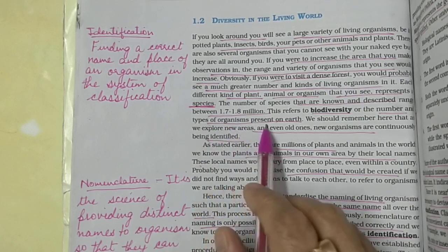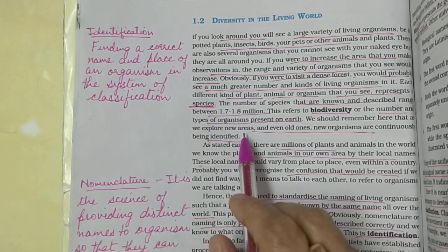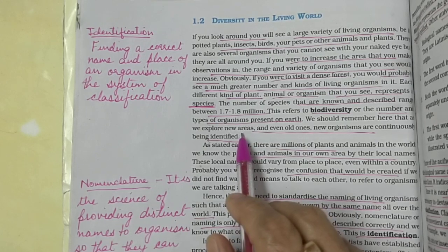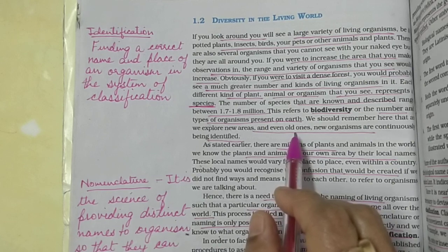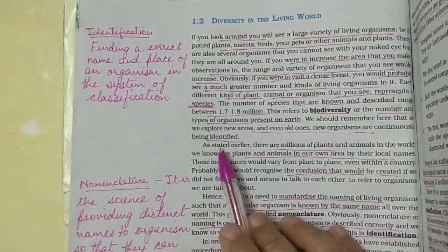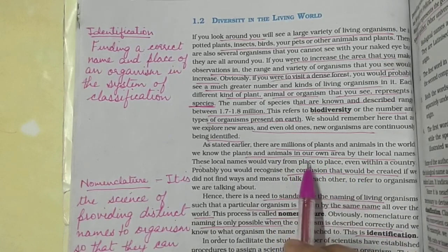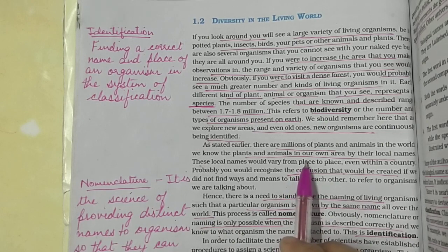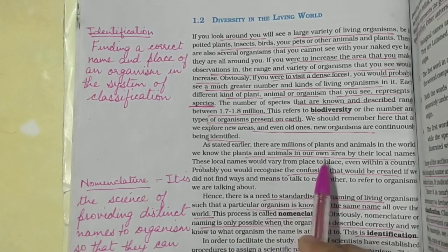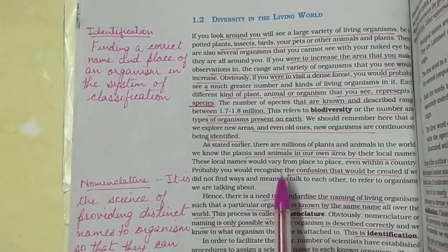In today's day, nearly 1.7 to 1.8 million species have been discovered. The number and types of organisms present on this earth is known as biodiversity. If you explore new areas, you will find more species, but even in old areas, every time you explore, you are going to find new organisms. There are millions of plants and animals in this world, and these plants and animals are known by local names, which vary from place to place.